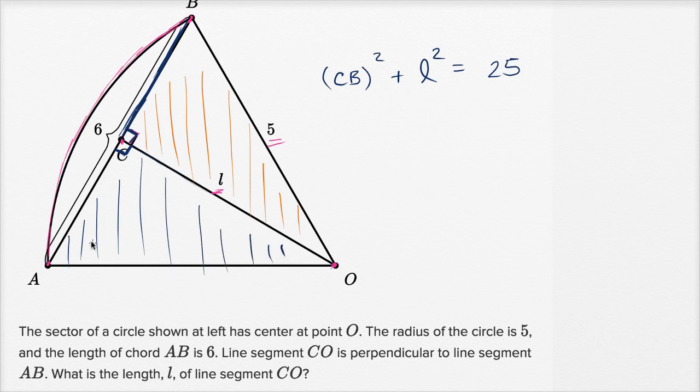Now the other thing that we know about this triangle down here is that AO is also going to be a radius of the circle. It goes from the center of our circle to the outside of the circle. So this is a radius, so this is also going to be five. So what's the length of AC? Well, we could use the same idea. We can relate AC, L, and five.